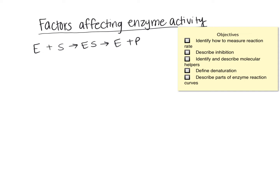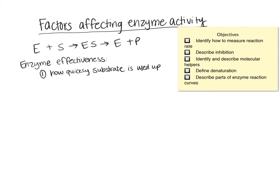When we're looking to see how effective an enzyme is at doing its job, there are two ways we can do this. Number one, we can measure the amount of substrate that is being consumed, and number two, how quickly the product is being formed. Either one of these can be used to judge or determine how good an enzyme is at doing its job.